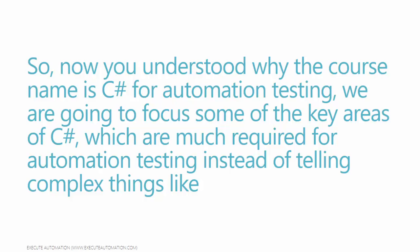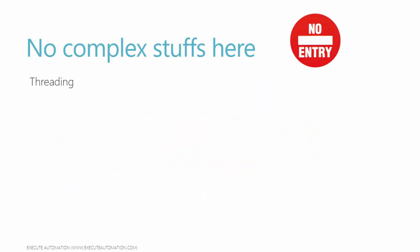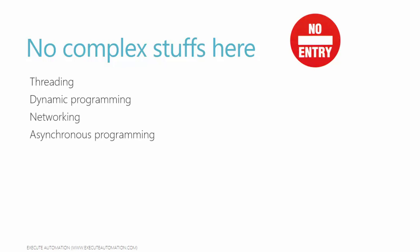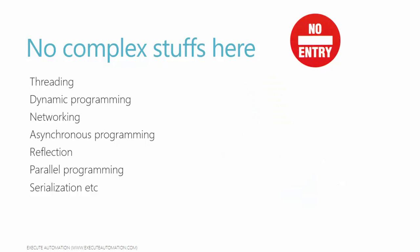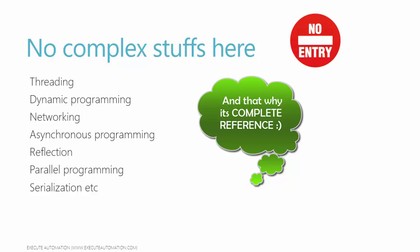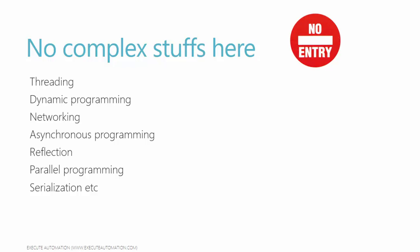We are going to focus on the key areas of C-sharp which are much required for automation testing, instead of discussing complex things like threading, dynamic programming, networking, asynchronous programming, reflections, parallel programming, serialization, etc. These are some of the most complex topics you find in a C-sharp complete reference book, where the first three or four chapters are useful but the rest can be confusing. Even complete reference books sometimes cover Windows programming, web service programming, database programming, ASP.NET, MVC — and seeing that, manual test engineers suddenly get the impression that programming is very complex.